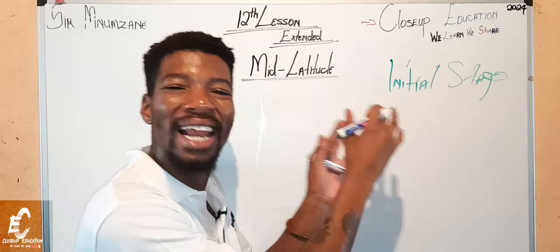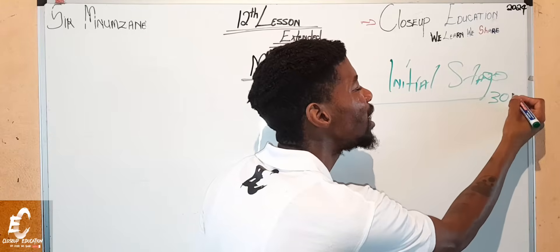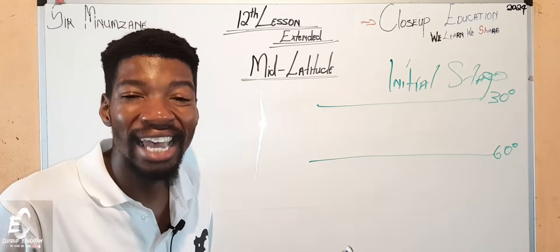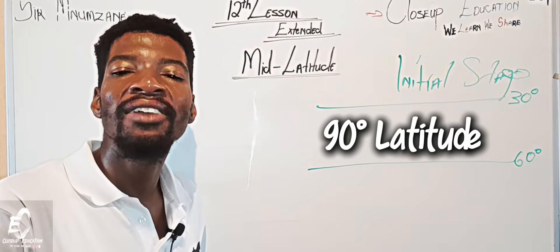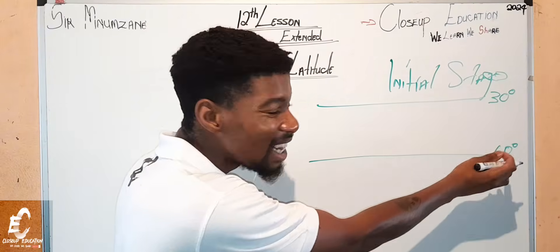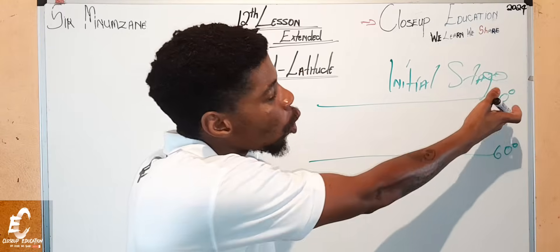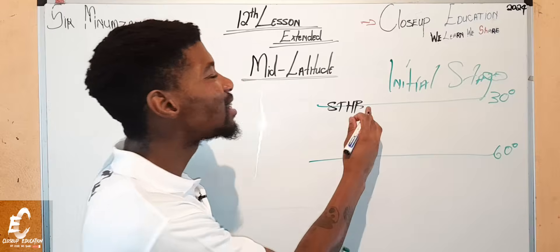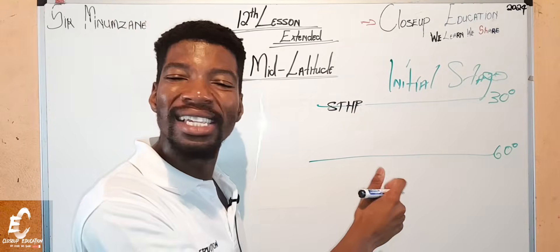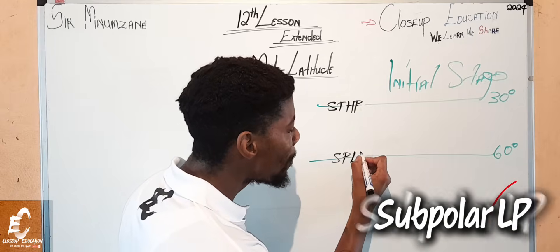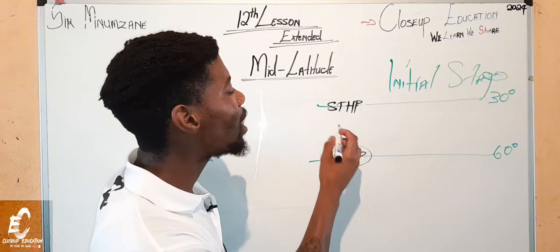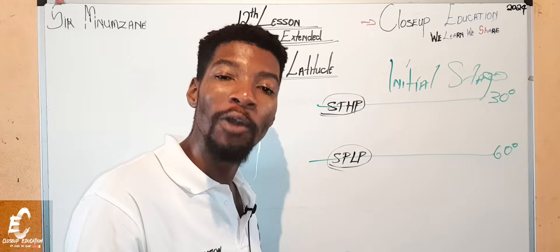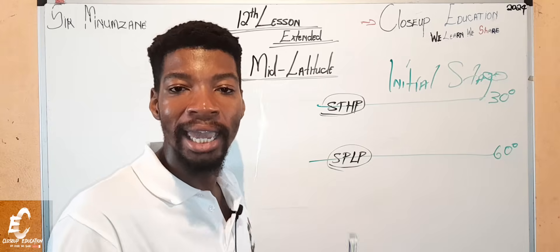The initial stage is where the mid-latitude cyclone actually begins. It occurs between 30 degrees to 60 degrees. At the 30 degrees belt, this is called our subtropical high pressure belt, and at 60 degrees this is called our subpolar low pressure belt. We know that air flows from a high pressure area to a low pressure area.